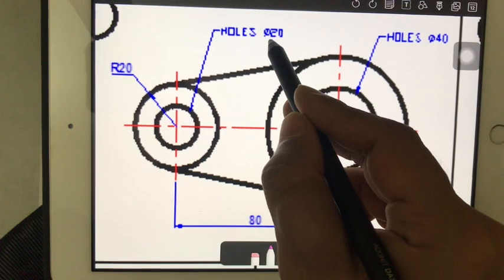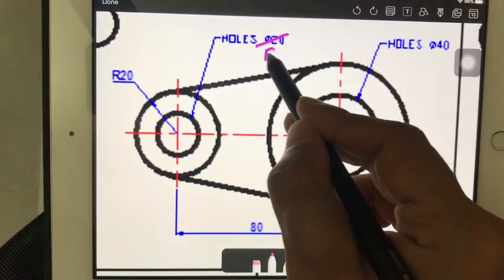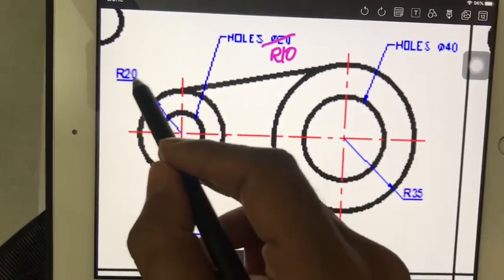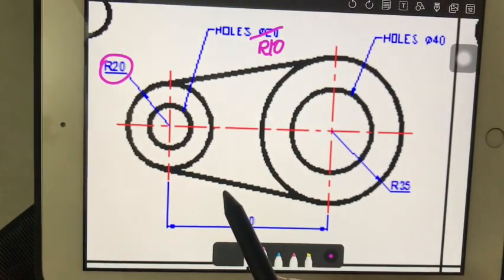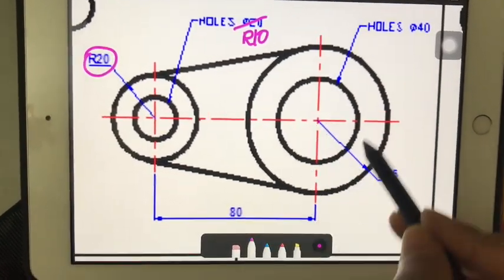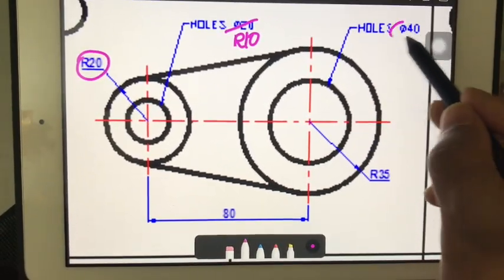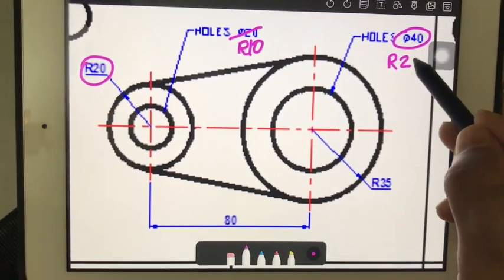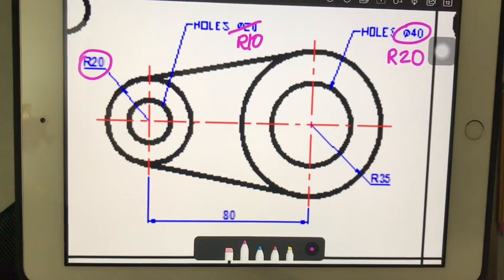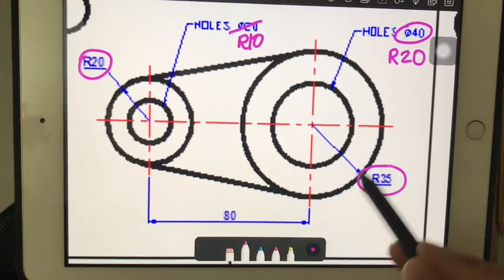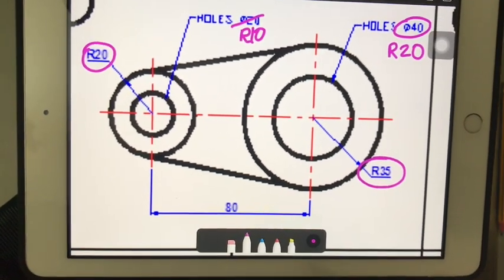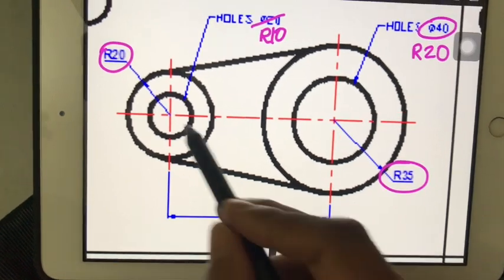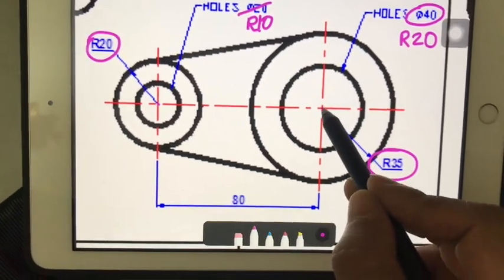The innermost circle here is 20 diameter which is nothing but radius 10, and this is radius 20. This circle here has a diameter of 40 which means the radius is 20, and again this is already in radius. Observe the distance between this center and this center is 80 millimeters.